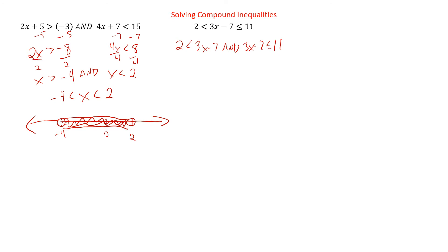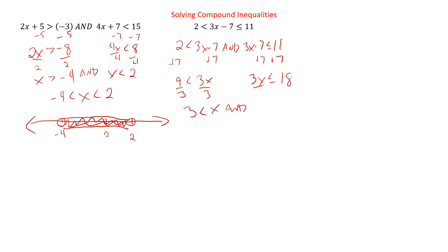Now we can solve. Plus seven to both sides, so nine is less than three x. Divide by three, so we have three is less than x. And plus seven again — notice these steps here are actually the same. Three x is less than 18. Divide by three, x is less than or equal to six. And from here, it's super easy to recombine them: three is less than x is less than or equal to six.